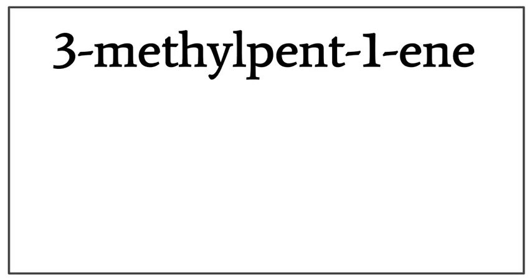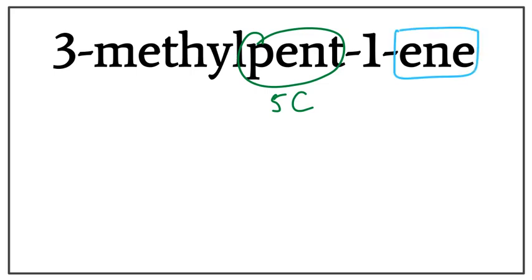Let's draw the structure for 3-methyl-pent-1-ene, or 3-methyl-pentene. 'Pent' tells us that there are 5 carbons in the longest carbon chain. 'Ene' tells us that this is an alkene, meaning that there is a double bond present between the carbons.